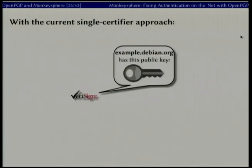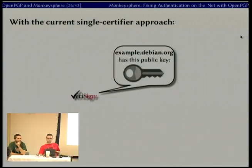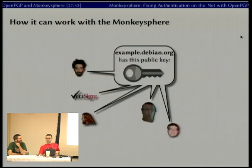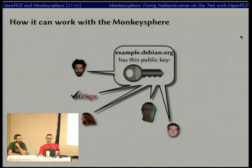With the current single-certifier approach, we have an assertion from a single place — in this case VeriSign — saying that a particular Debian domain has a given public key. But with a Monkeysphere multi-certifier approach, any number of assertions can be made. It's not just Debian users — VeriSign is still capable of making a statement about any given key. We don't need to exclude that. This is, in fact, a superset of that type of authentication.